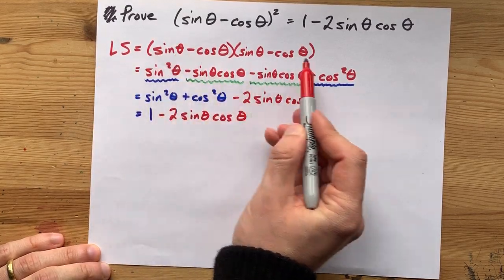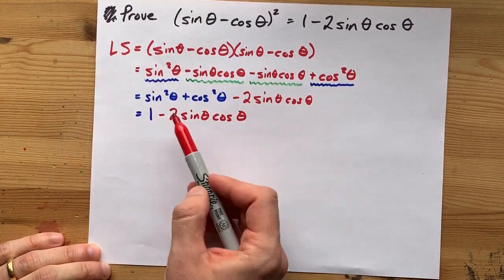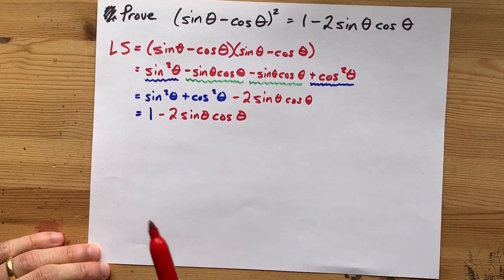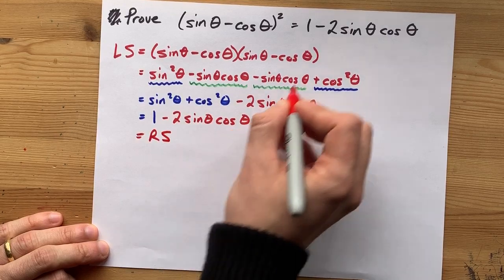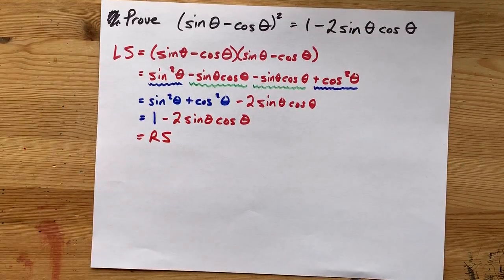So, what I've got here is I've multiplied this out, collected my like terms, and used the Pythagorean identity to get my left hand side to equal the right hand side of that equation. Beautiful.